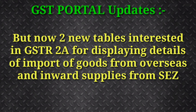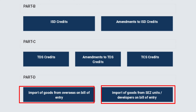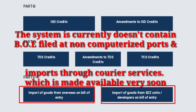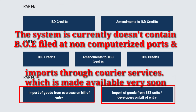Two new tables have been inserted in GSTR 2A for displaying the details of import of goods from overseas and inward supplies made from such units or developers. Taxpayers can now view their bill of entry data which is received by the GSTN system from ICEGATE systems — that is, Customs. The present data has been uploaded on a trial basis to gather feedback from taxpayers. Further, taxpayers may note that the system currently does not contain import information for bill of entries filed at non-computerized ports and imports made through courier services or post offices.